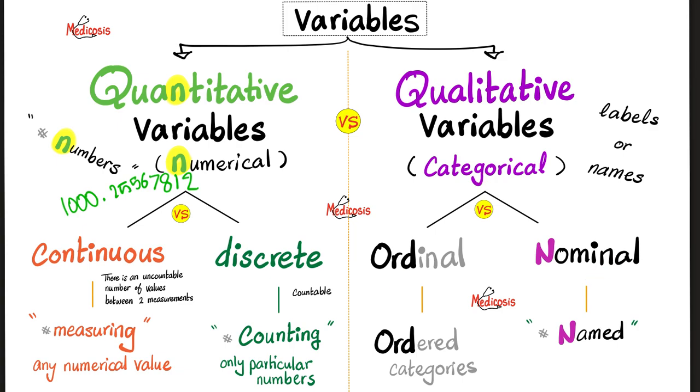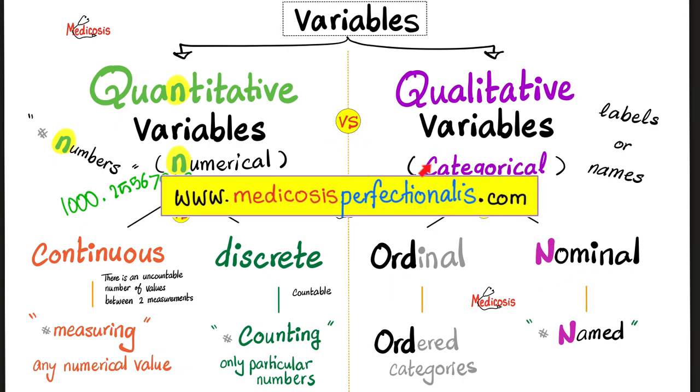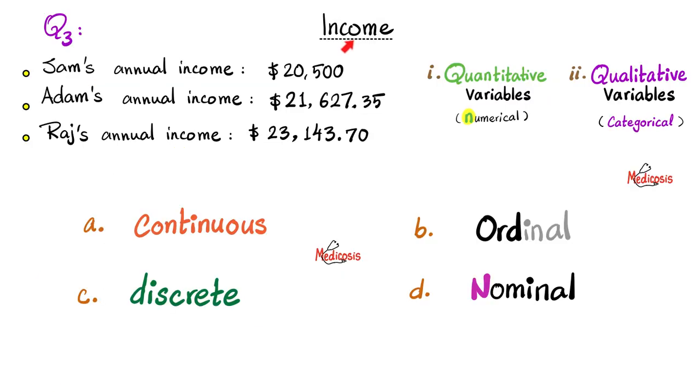Next, we have ordinal categories or ordinal variables. These are ordered categories. For example, we have novice chess player, and then we have intermediate chess player, and then we have advanced chess player. There is an order for these categories. But born in Greece versus born in Egypt, that's nominal. There is no order there. If you wish to download these doozy colorful notes, go to medicosisperfectionalis.com. I help you learn, understand, and pass exams.